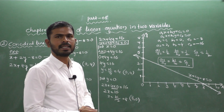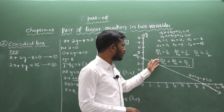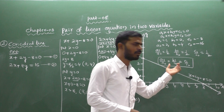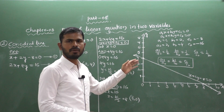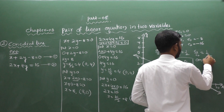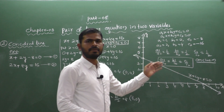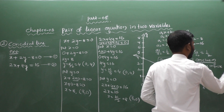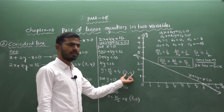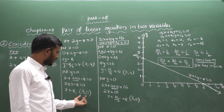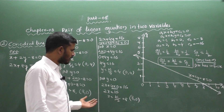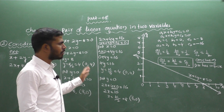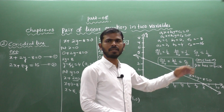So the condition is: if a1/a2 is not equal to b1/b2, it is an intersecting line. If a1/a2 equal b1/b2 equal c1/c2 — all three ratios equal — it is a coincident line, which has an infinite number of solutions. For example, both equations give (0,4) and (8,0), and in fact every point on the line is a common solution.